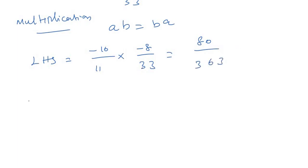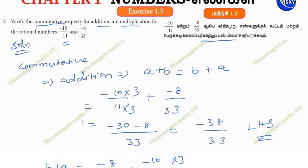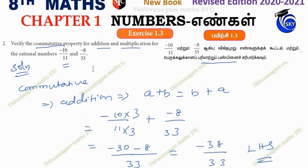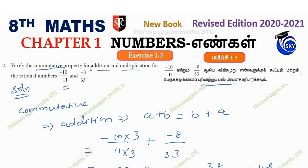This is RHS, B into A, minus 8 by 33 into minus 10 by 11. So this is 80 over 363. Minus minus is plus. LHS and RHS are equal, this is commutative property. Thank you.